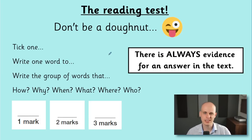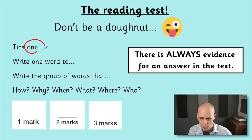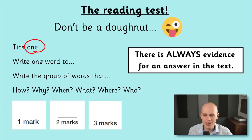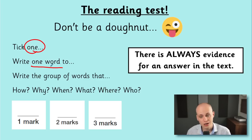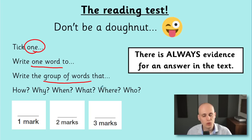My next tip — don't be a donut. There are so many ways to be a donut. If the question says tick one, please just tick one. If it says tick two, please just tick two. Just do the thing it says. Write one word means write one word. The amount of times I've seen children write two words for their one word answer — and one of the words is correct but the other isn't — so they don't get the mark. 'Write the group of words' suggests there's more than one word.